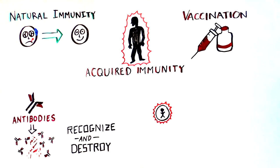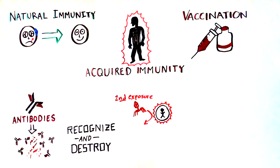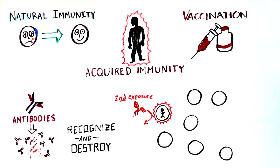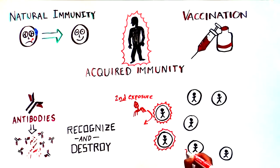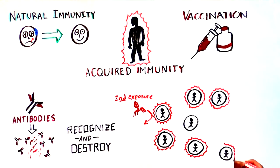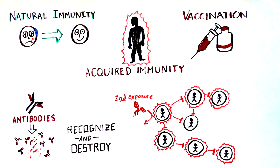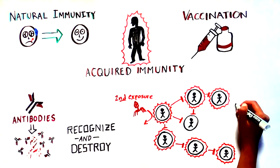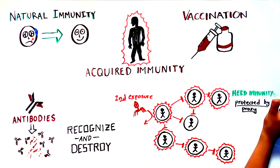For infectious diseases, this not only protects you from getting sick when you're exposed to the pathogen for a second time, but can also prevent you from spreading the disease to other people. This is a great way to prevent the spread of disease, because the more people in a population who become immune, the less that pathogen is able to jump from person to person, essentially breaking the cycle of transmission. When enough people in a population become immune, the rest of the population is protected by proxy, establishing herd immunity.